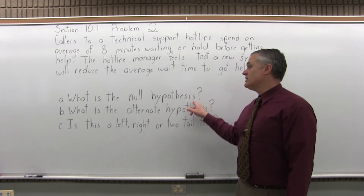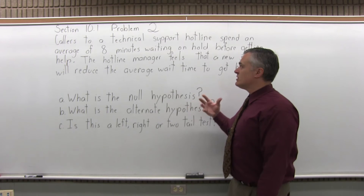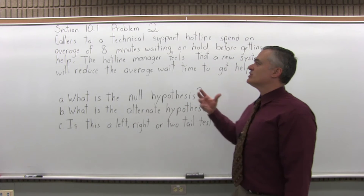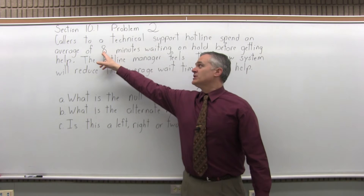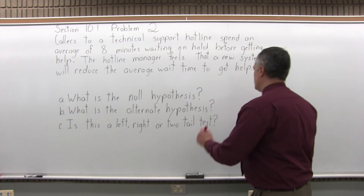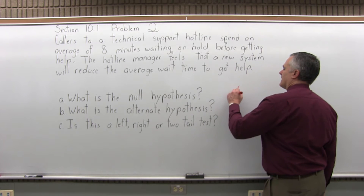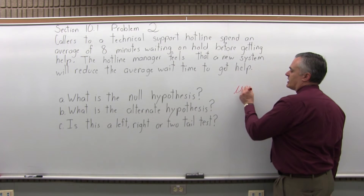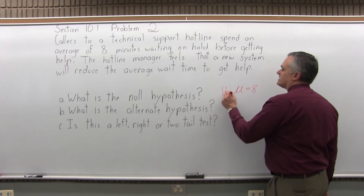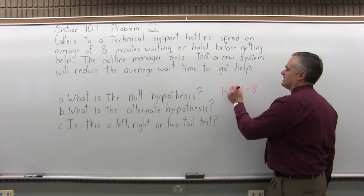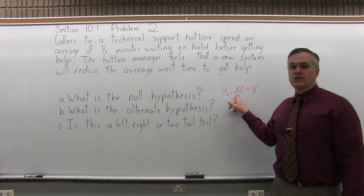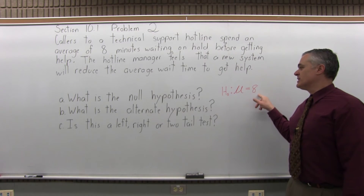Part A: what is the null hypothesis? The null hypothesis is always the one that contains the condition of equality. So it's going to mean that the population average — the true average — is 8 minutes. We will have mu, the symbol for population average, equal to 8. The symbol for the null hypothesis is a capital H with a subscript of 0 followed by a colon. So the null hypothesis is H₀: μ = 8.